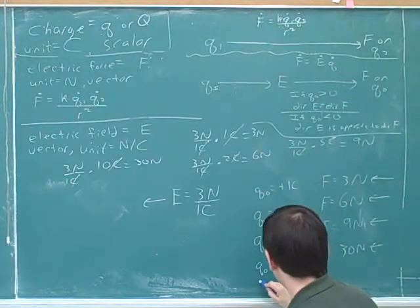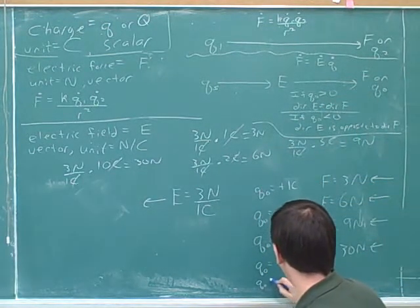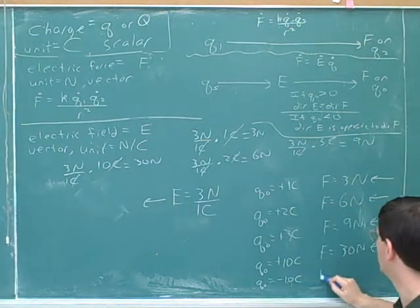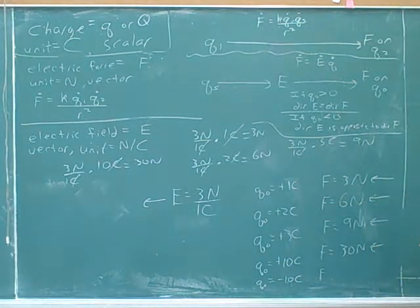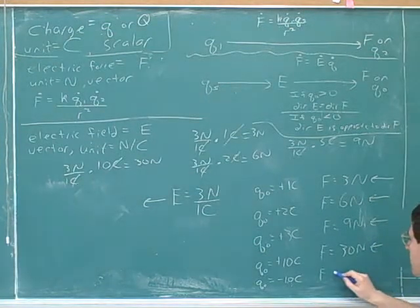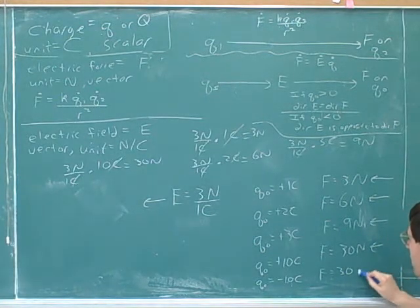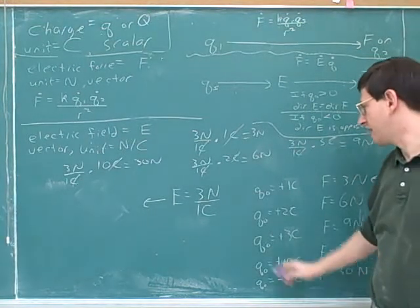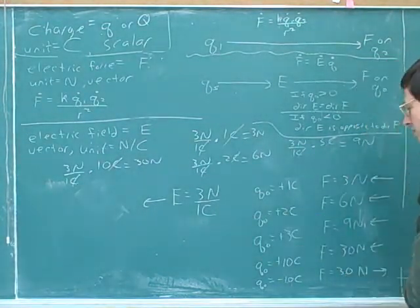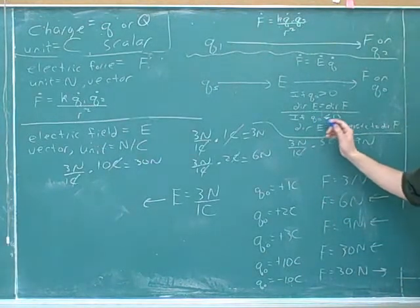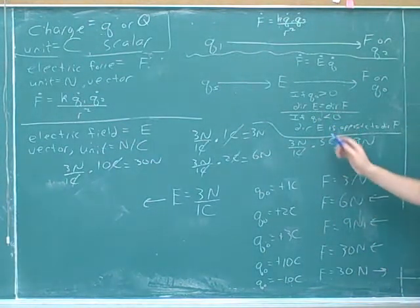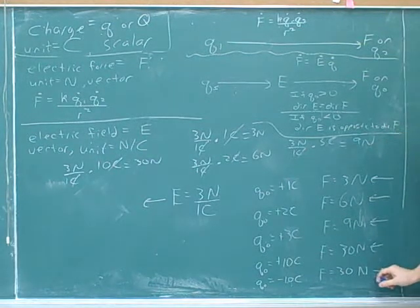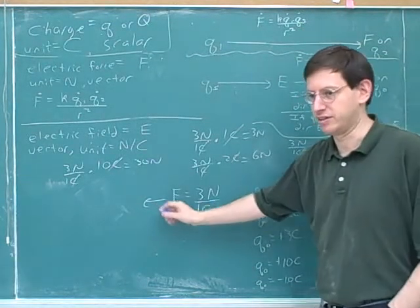Suppose that q-naught was equal to negative 10 coulombs. What could you tell me about the force then? It's 30 newtons, to the right. It would still be 10 times 3 for 30 for the magnitude, but now we have a test charge that's negative. So now we know that the direction of the electric field is opposite to the direction of the force. So that would be in this direction since the field is still to the left.